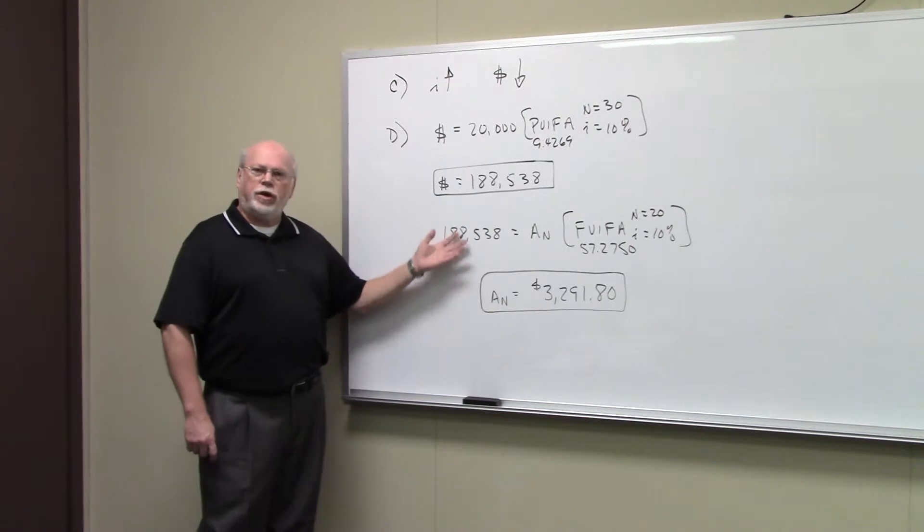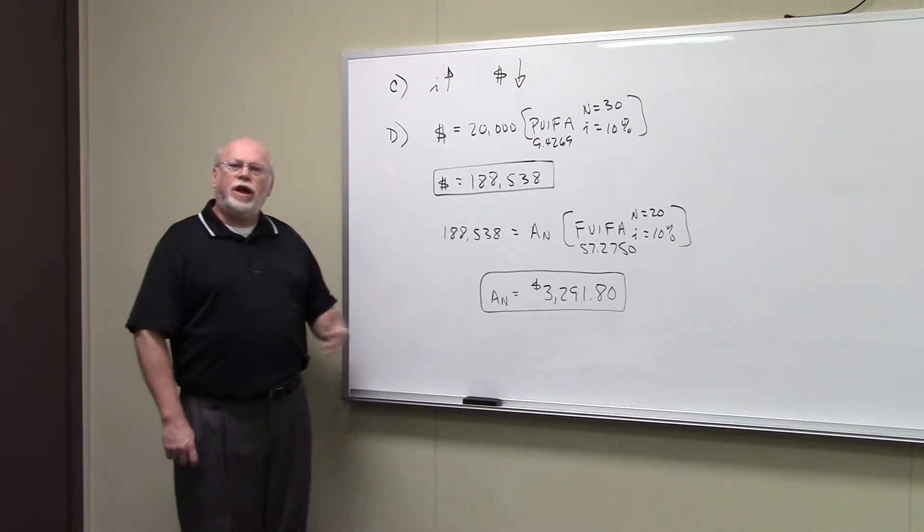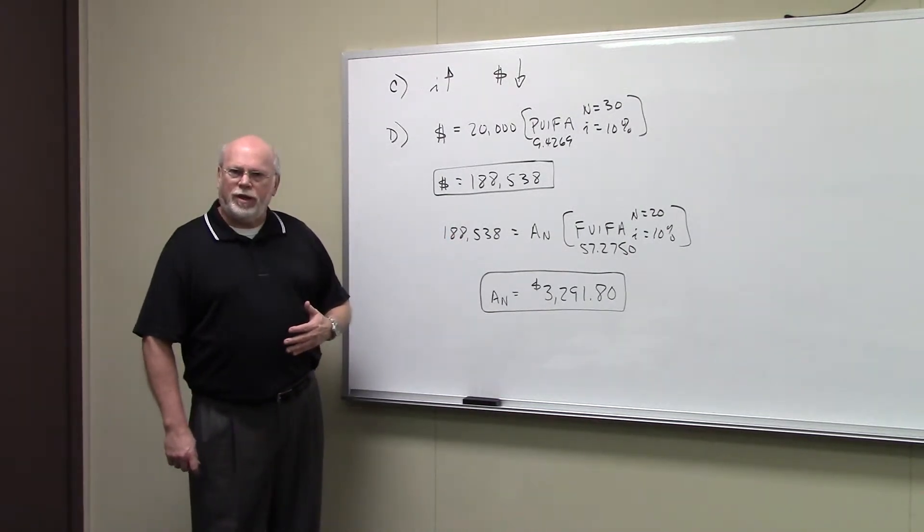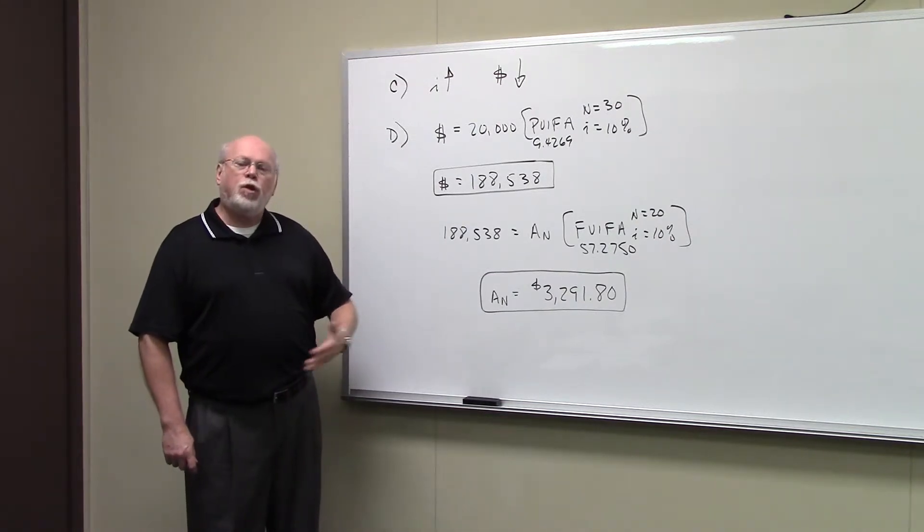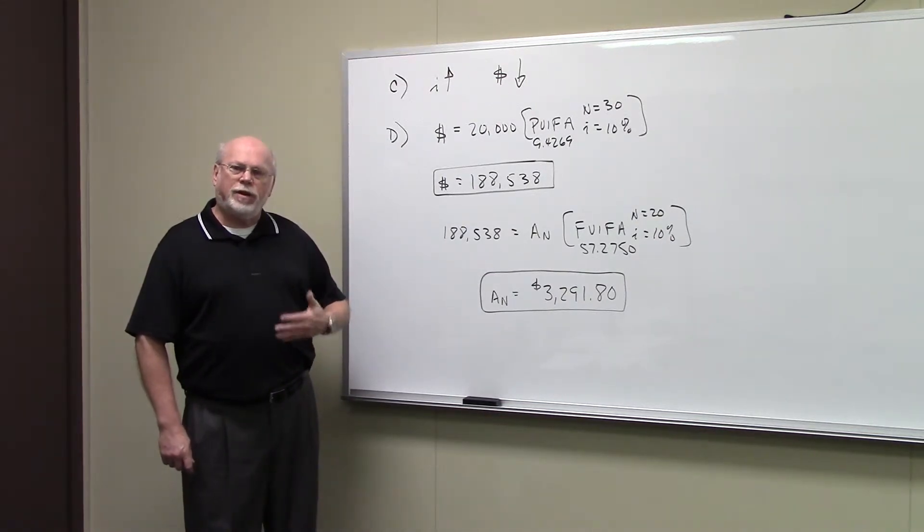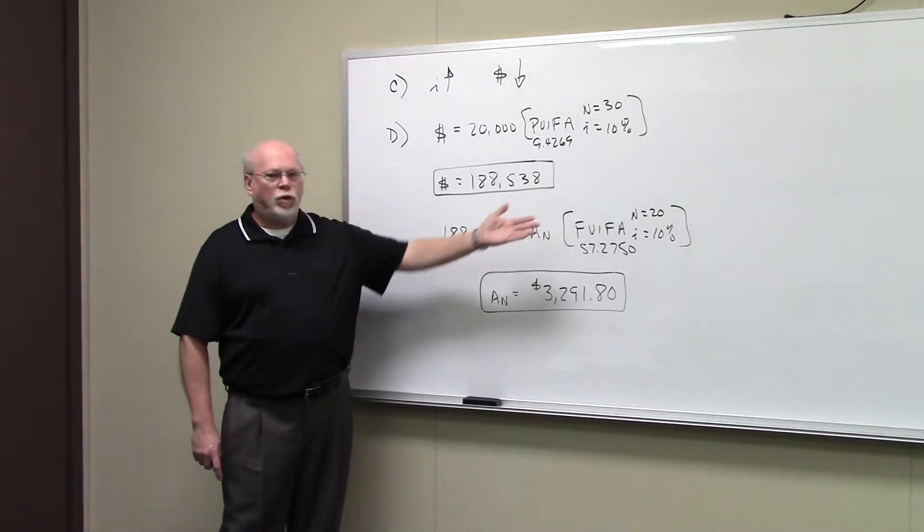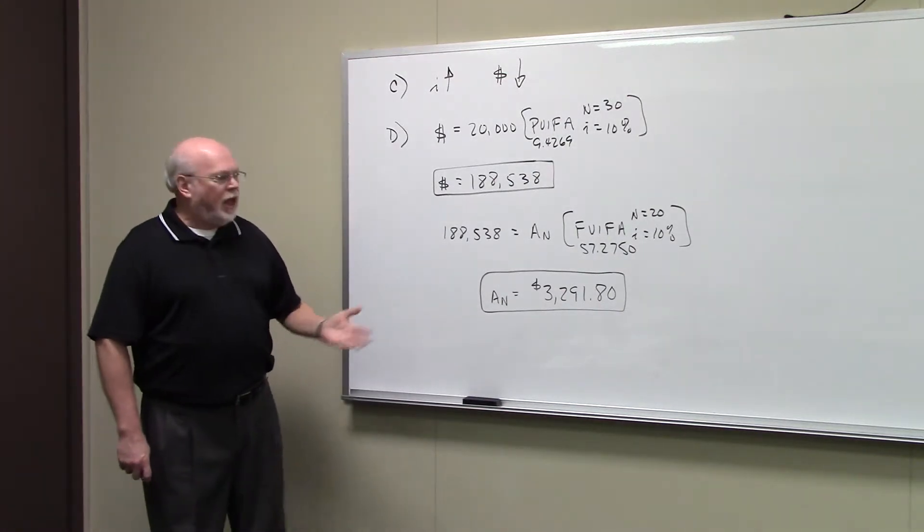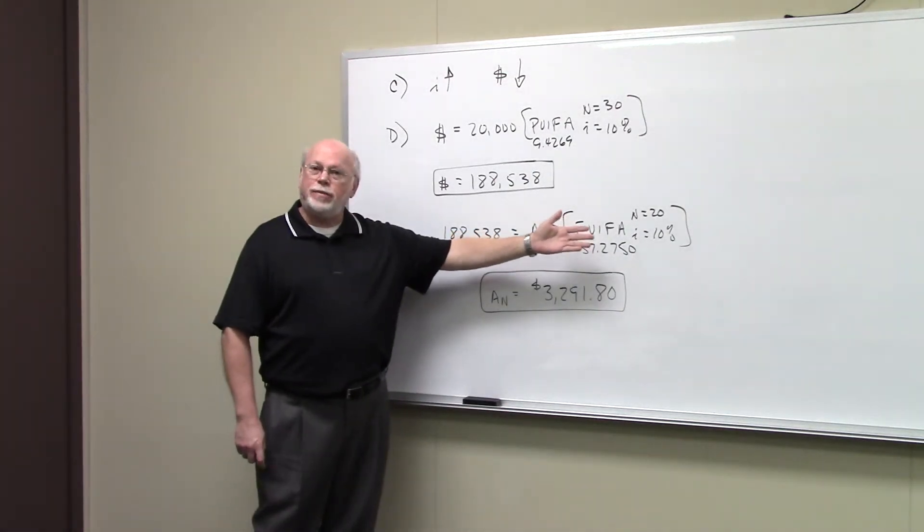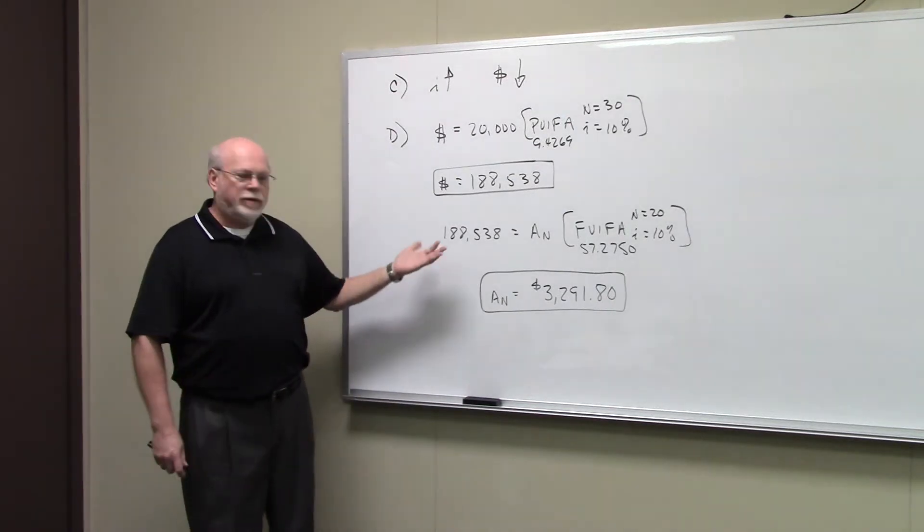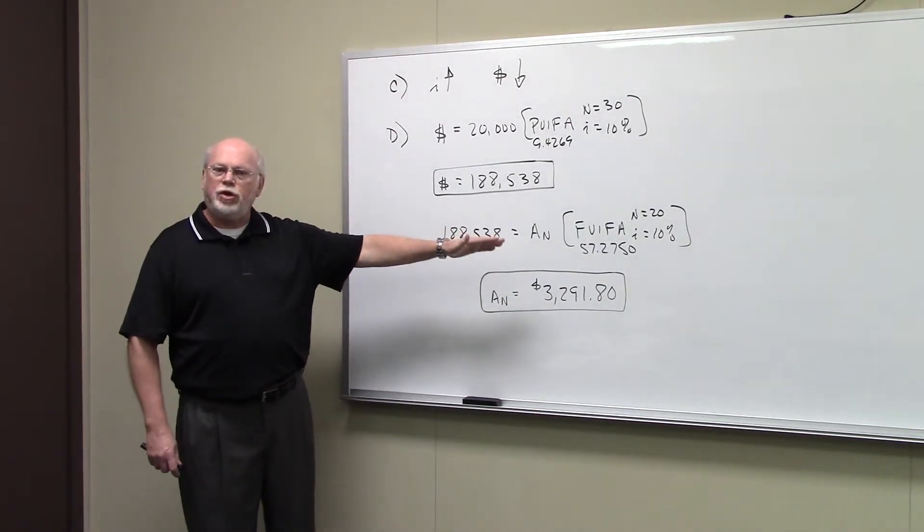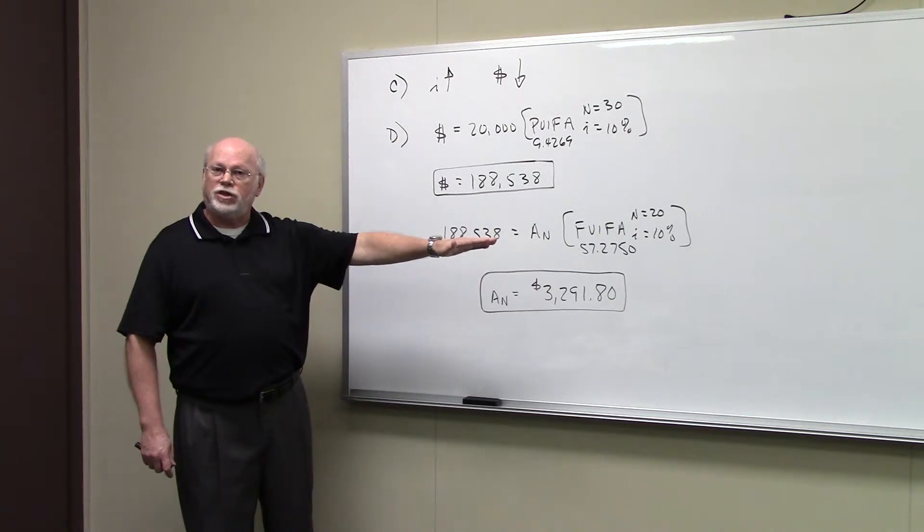The other part of this problem says, well, we're not going to save for this retirement with a lump sum payment, making one payment in the account today. We want to save for our retirement by making equal annual payments into the account every year for 20 years. And they tell us we're going to earn 10% on our money. And this is an annuity problem. The big dollar amount is going to be equal to some annuity times the appropriate interest factor.